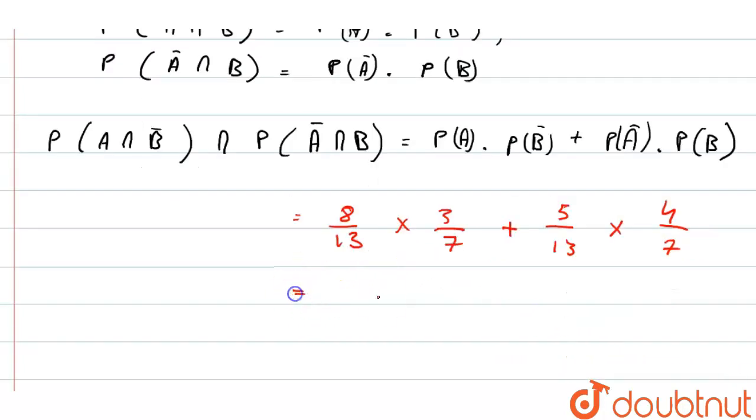So if we simplify this we will get 24 by 91 plus 20 by 91, that is equal to 44 by 91.